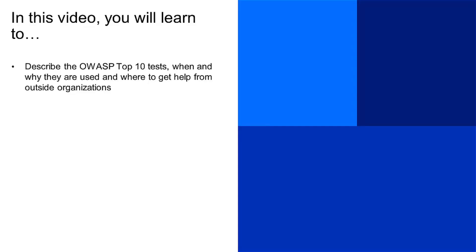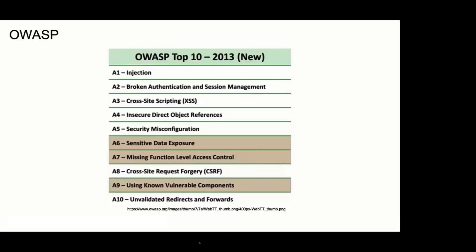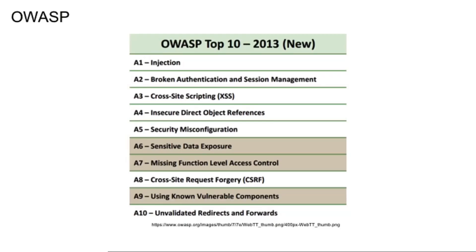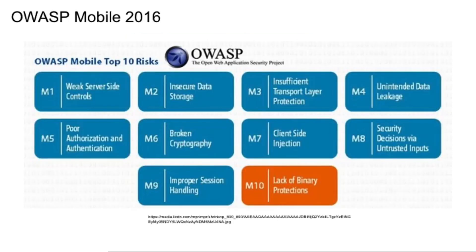In this video, you will learn to describe the OWASP Top 10 tests, when and why they are used, and where to get help from outside organizations. Another best practice that web applications need to follow is the OWASP Top 10. If you are dealing with a web application or applications in general, you can use the OWASP Top 10 and start performing tests on each section. OWASP — if you go to Google and search for OWASP, you'll go to owasp.org and find a lot of information to help you test your application.